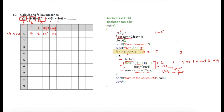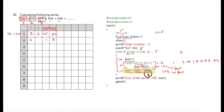After that i is incremented to two, the condition two less than or equal to five is true so the loop executes again. Next, factorial of three, which is six, will be calculated, and the subsequent value of sum will be updated. Suppose the division gives result x, then x plus 0.5 will be stored into sum. The same process continues for all five iterations, and at the end the calculated value in sum is printed.